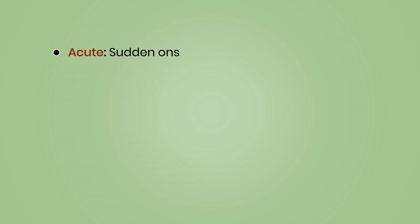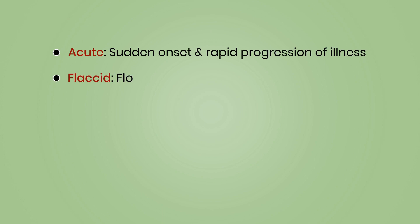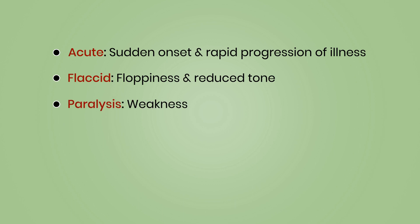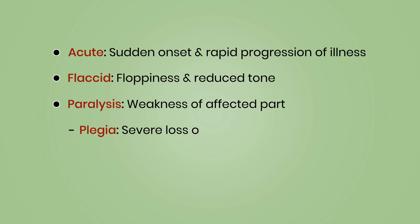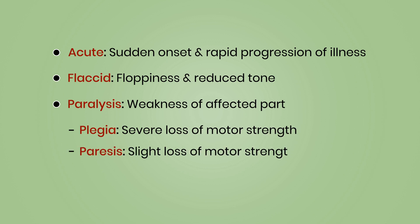Acute refers to sudden onset and rapid progression of illness. Flaccid refers to floppiness and reduced tone. Paralysis means weakness of the affected part. Plegia refers to severe loss of motor strength, while paresis refers to slight loss of motor strength.